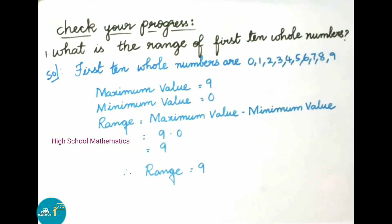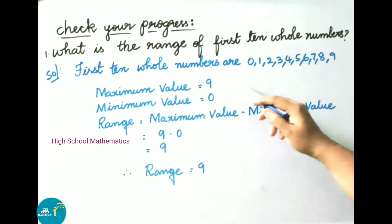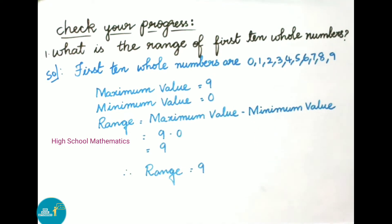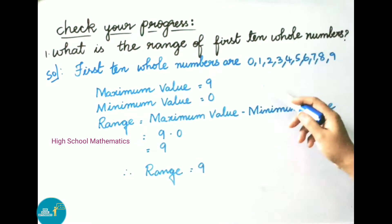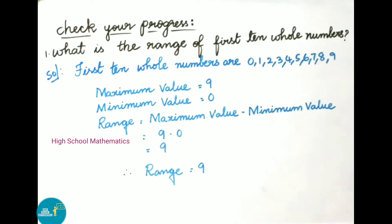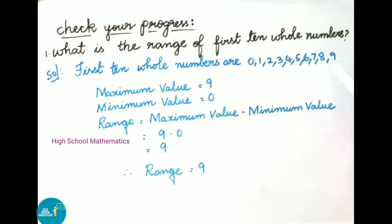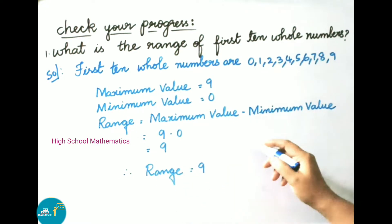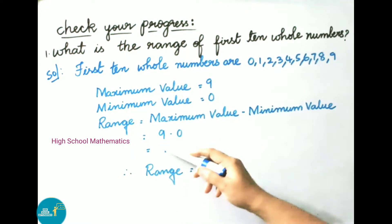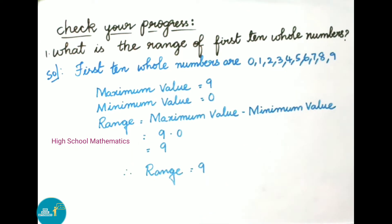Check your progress: What is the range of the first ten whole numbers? The first ten whole numbers are 0 through 9. Maximum value is the highest value in the given set, which is 9. Minimum value is the lowest value, which is 0. Therefore, range equals maximum value minus minimum value, that is 9 minus 0, which equals 9. The range of the first ten whole numbers is 9.